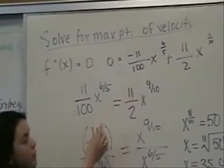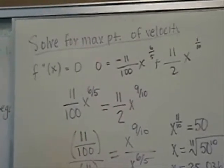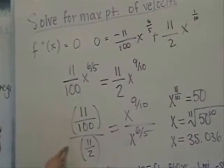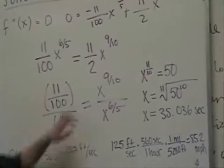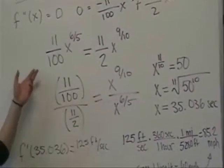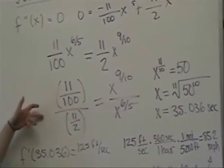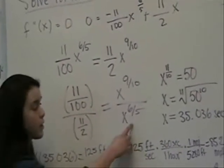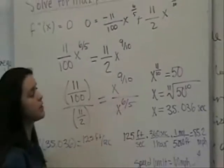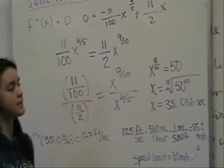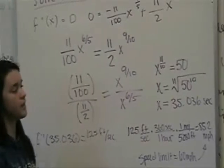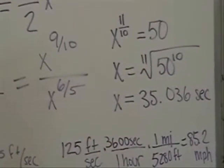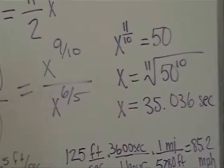To start with we simply moved over the first term to the left side of the equation. And then we divided the first coefficient by the second coefficient and divided the first x term by the second x term. This was just using simple algebra from this step to this step. And in order to make this into a single x term we simply subtracted the bottom exponent from the top exponent. So this gave us x to the 11 tenths equals 50. Then we took the 11th root of 50 to the tenth. As we found out x equals 35.036 seconds when velocity is at its greatest.